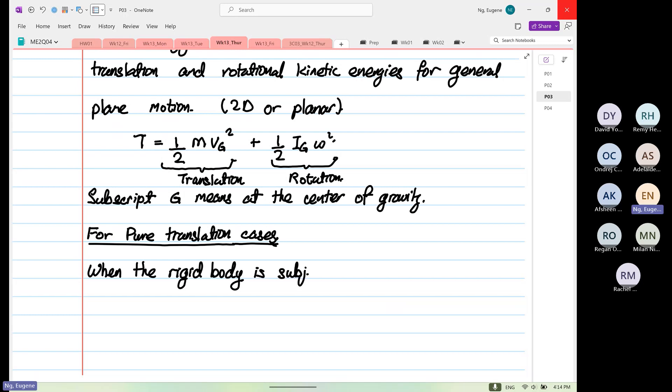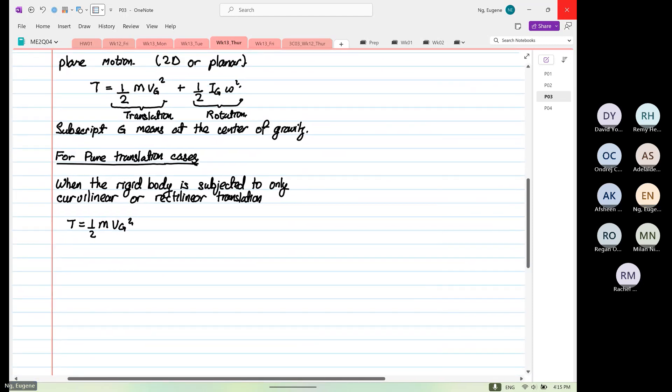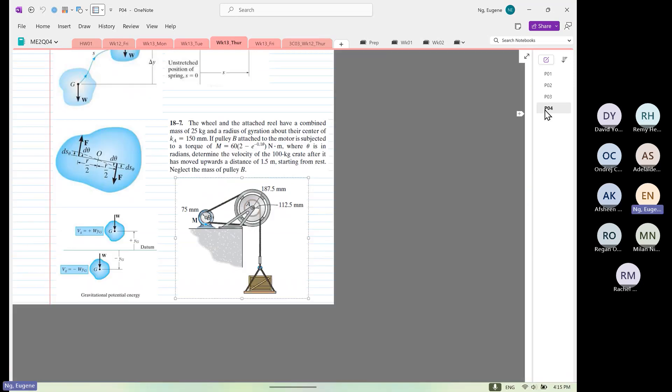It's subjected to only, so two types, curvilinear or translation or rectilinear. The equation will just have T is equal to half M V_G squared. So there's a diagram that I'm going to attach to here, and this diagram you can find on your Avenue to Learn.